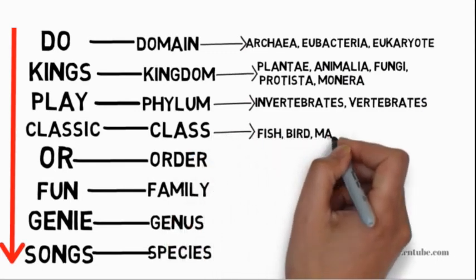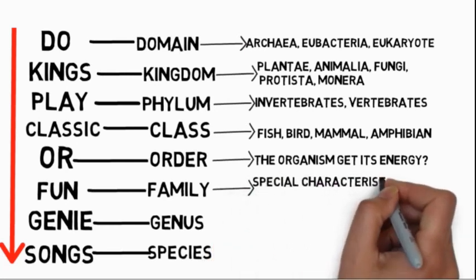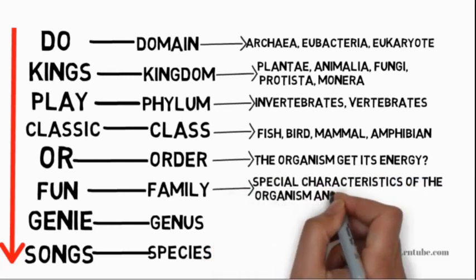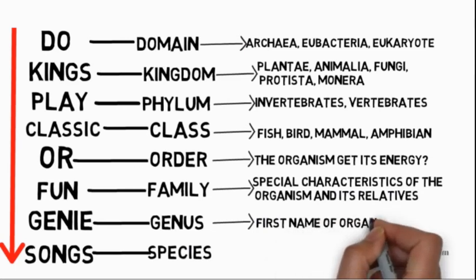In the class, examples are fish, bird, mammals, and amphibians. Under order, you consider where the organism gets its energy from. Under family, you discuss the special characteristics of the organism and its relatives. Genus is the first name of the organism, and species is the last name.